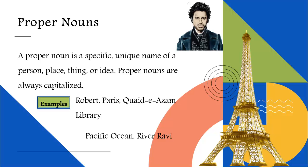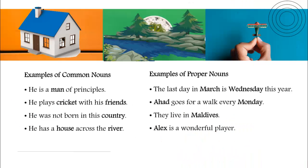Let's have a look at some more examples of common and proper nouns. 'He is a man of principles.' The word 'man' is a common noun — it is a generic name and we can use it for any man. Next example: 'He plays cricket with his friends.' The words 'cricket' and 'friends' are common nouns.